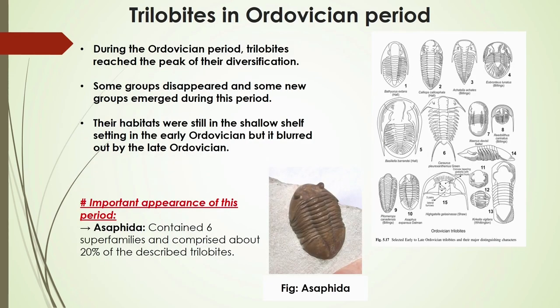In the Ordovician, trilobites reached their highest point of diversification. Shallow water provenance was still seen in the Ordovician, but in the late Ordovician they began to disappear. An important appearance of this timeline is Asaphida, comprising 20 percent of the described trilobites and containing six superfamilies.